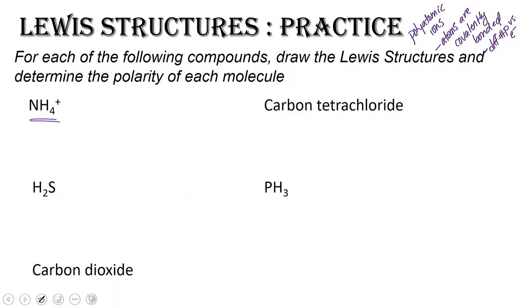So let's take a look at NH4. Our rule was we arrange the atoms in space and put the least electronegative atom, or the atom that can make more bonds, in the middle. Well, if we look at nitrogen and hydrogen, hydrogen is the least electronegative. However, hydrogen can only have one bond, so it's always going to be a terminal atom. So we'll put nitrogen in the center with our hydrogens on the four sides.